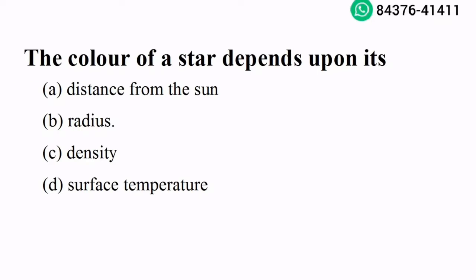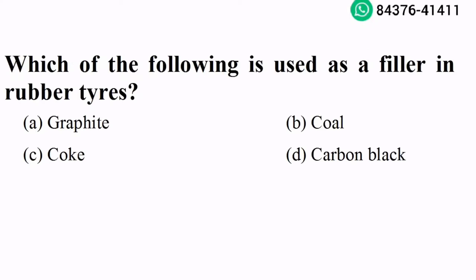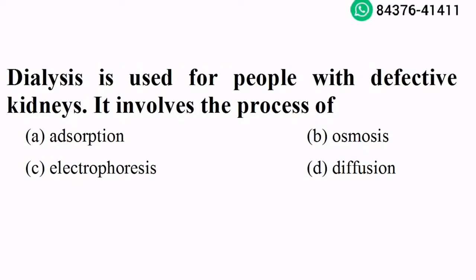The color of a star depends upon its surface temperature. Option D is the right answer. Which of the following is used as filler in rubber tires? Carbon black. Option D is the right answer. Dialysis is used for people with defective kidneys.